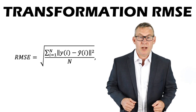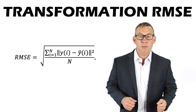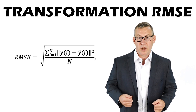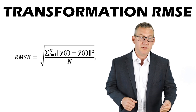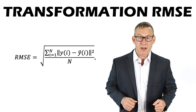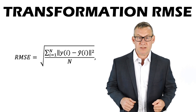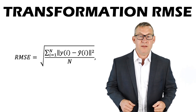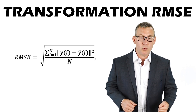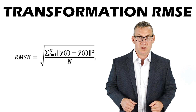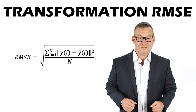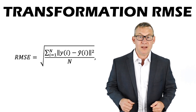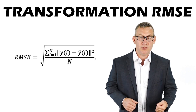Transformation root mean square error is useful for comparing the same types of transformations but not different types. For example, root mean square error can compare an affine to another affine transformation, but shouldn't be used to compare an affine to a third-order polynomial transformation. Higher-order transformations will have a lower root mean square error than lower-order transformations even if they have more distortion, because they can warp around the control points used to measure the error.